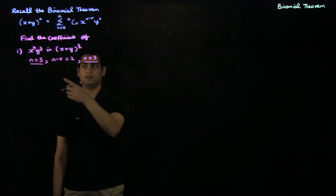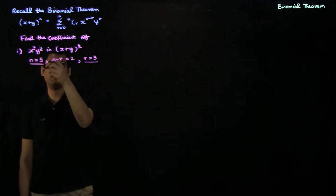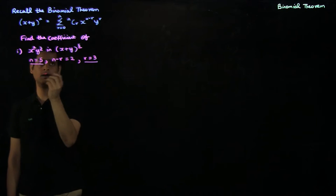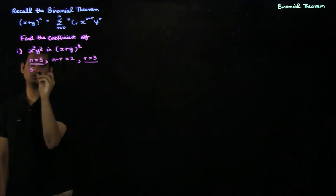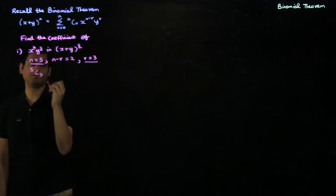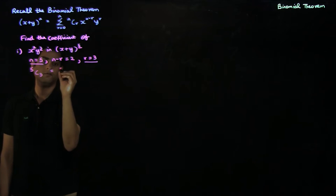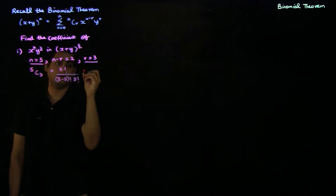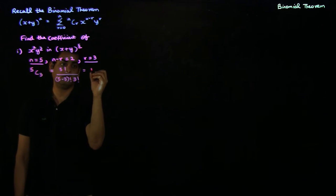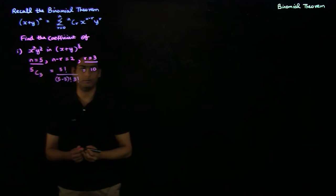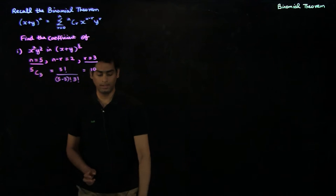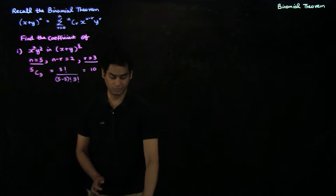So the coefficient of x²y³ in the binomial expansion of (x + y)^5 is 5C3, which is 5! divided by (5−3)! times 3!, and this evaluates to 10. This is a typical example problem you might face in an exam situation.